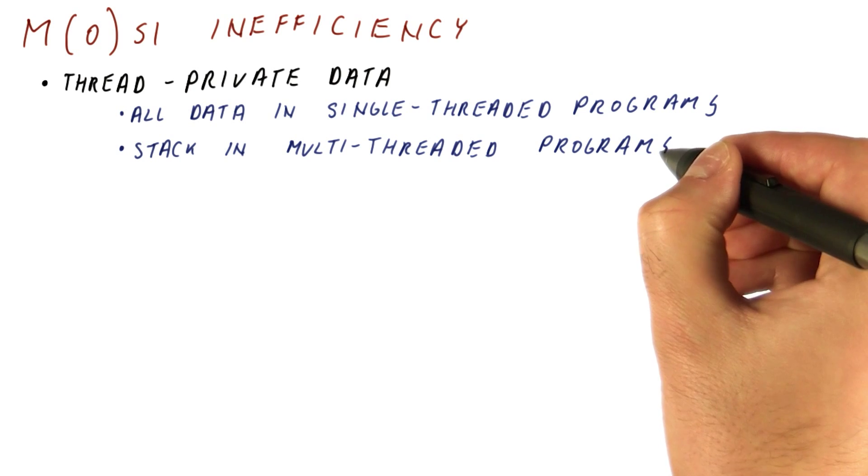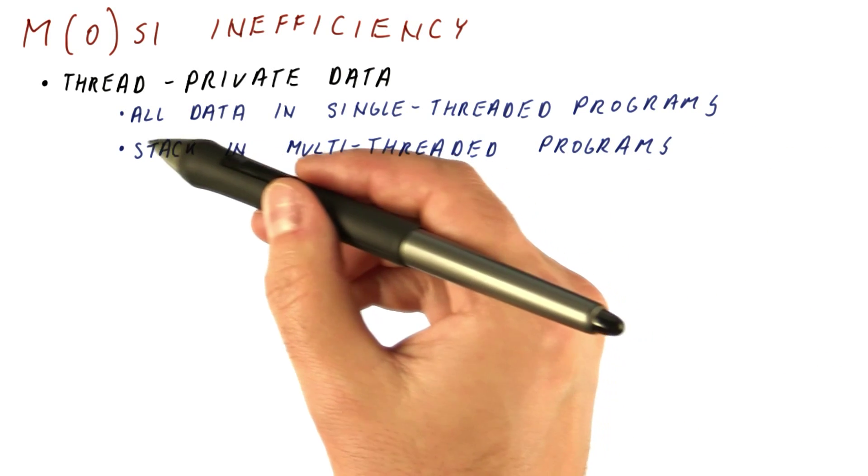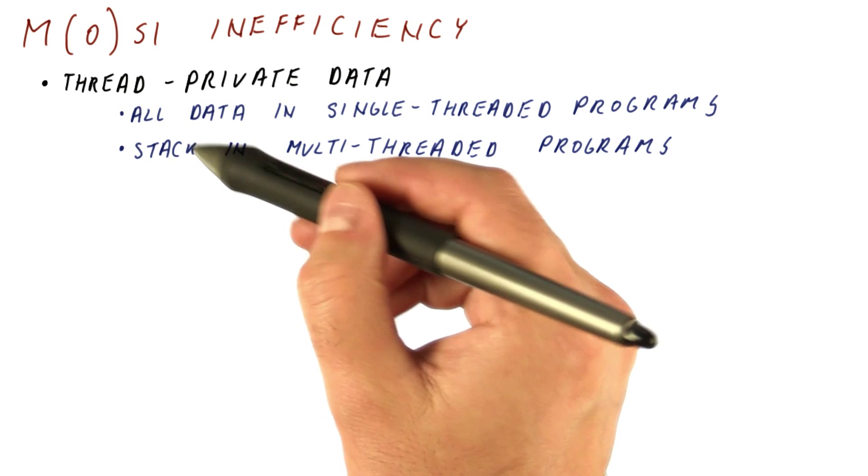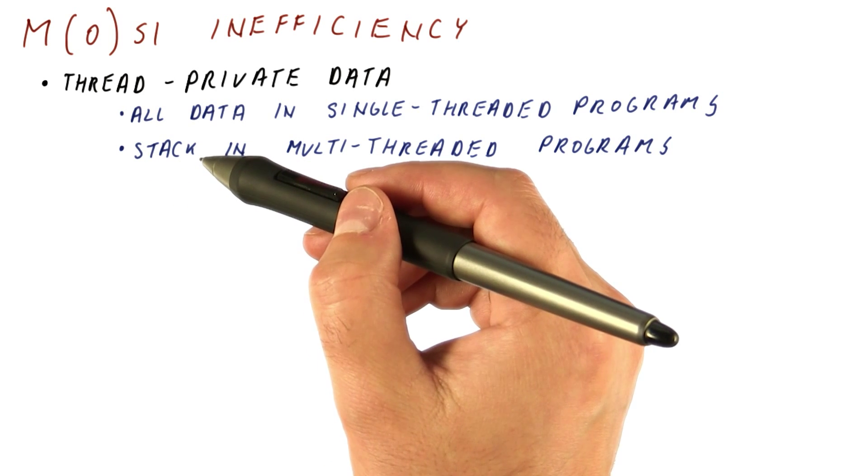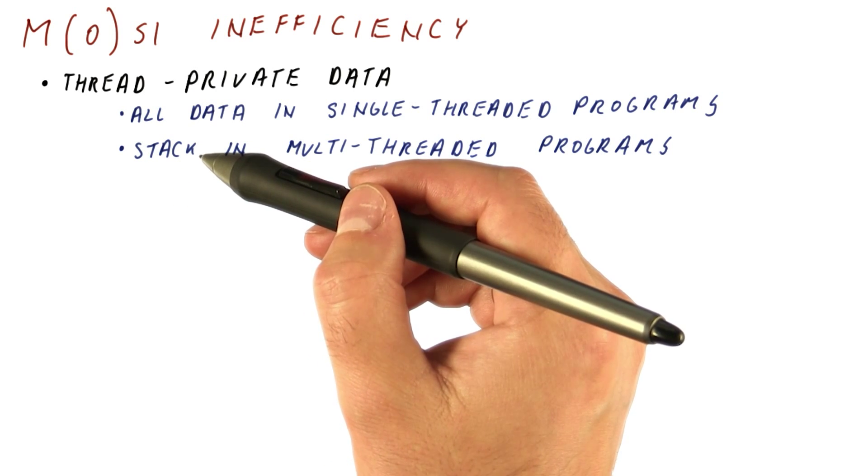Even when we have a parallel program, we still have data such as the stacks of individual threads that are accessed only by a single thread.